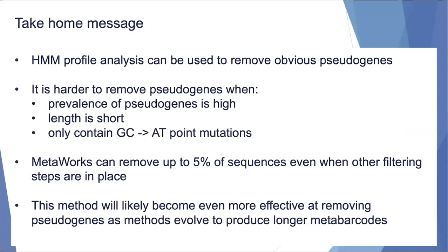The take-home message is that HMM profile analysis can be used to remove obvious pseudogenes. It was harder to remove pseudogenes when their prevalence is high, sequence length is short, or they only contain GC to AT point mutations. Our pipeline can remove up to 5% of sequences even when other filtering steps are in place. This method will likely become more effective as technical methods evolve to produce longer metabarcodes. Thank you.